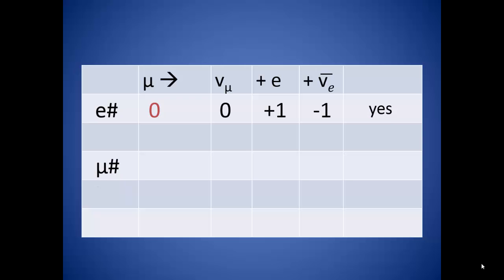Then we can do the same thing for the muon numbers. A muon has a muon lepton number of positive one. A muon neutrino also has positive one. An electron has a muon lepton number of zero, and an electron antineutrino has a muon lepton number of zero as well. The numbers on the left add up to positive one, and the numbers on the right add up to positive one. So the muon lepton numbers are conserved.